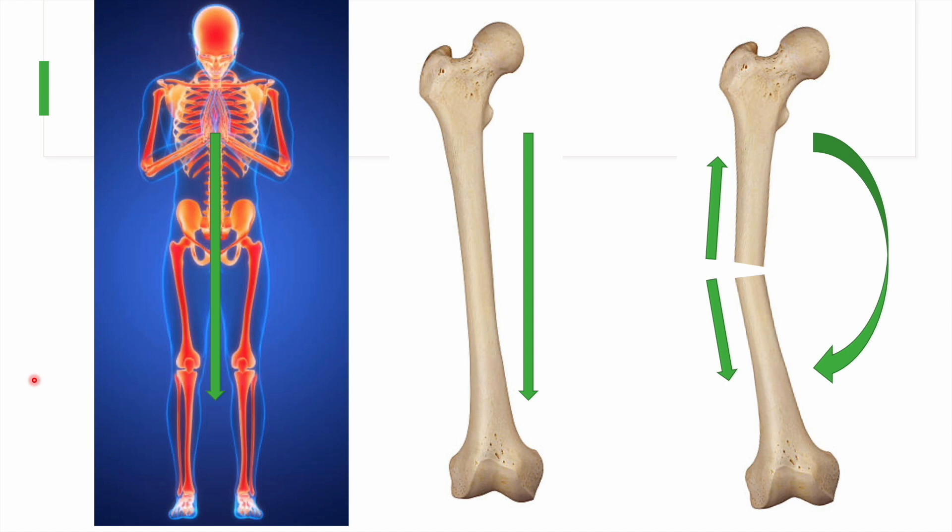If we look at the human body, the weight-bearing axis is not perfectly aligned with each bone. One surface of a bone is close to the weight-bearing axis while the other surface may be away from it.